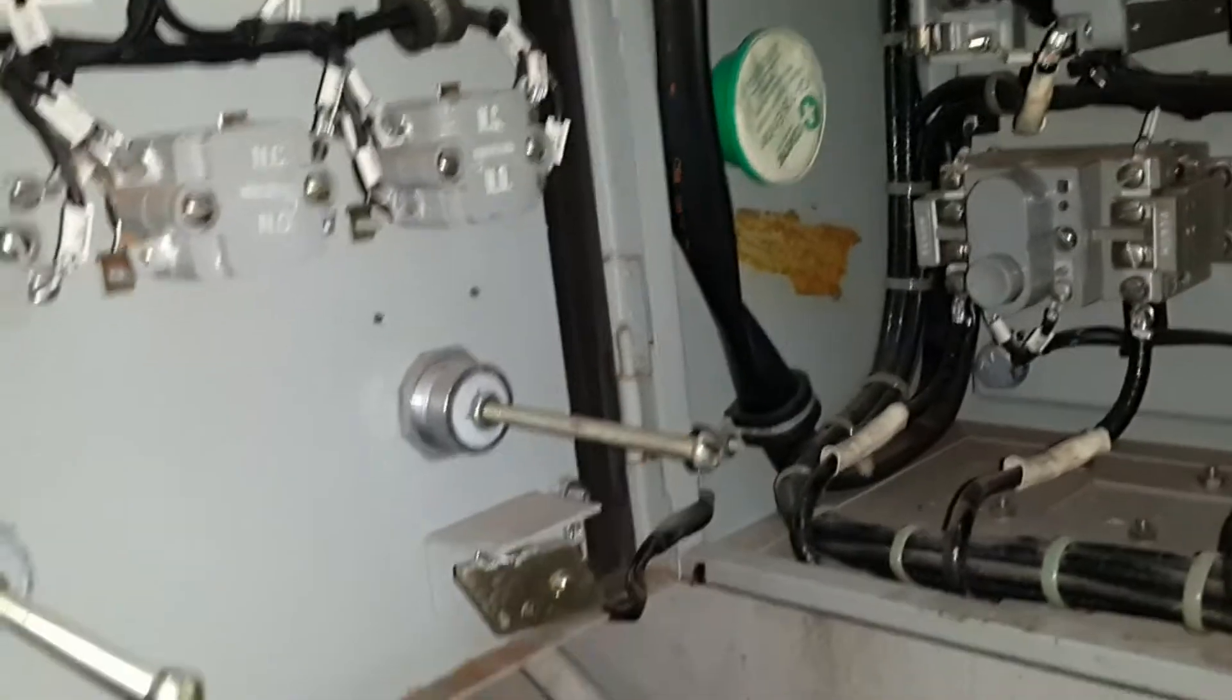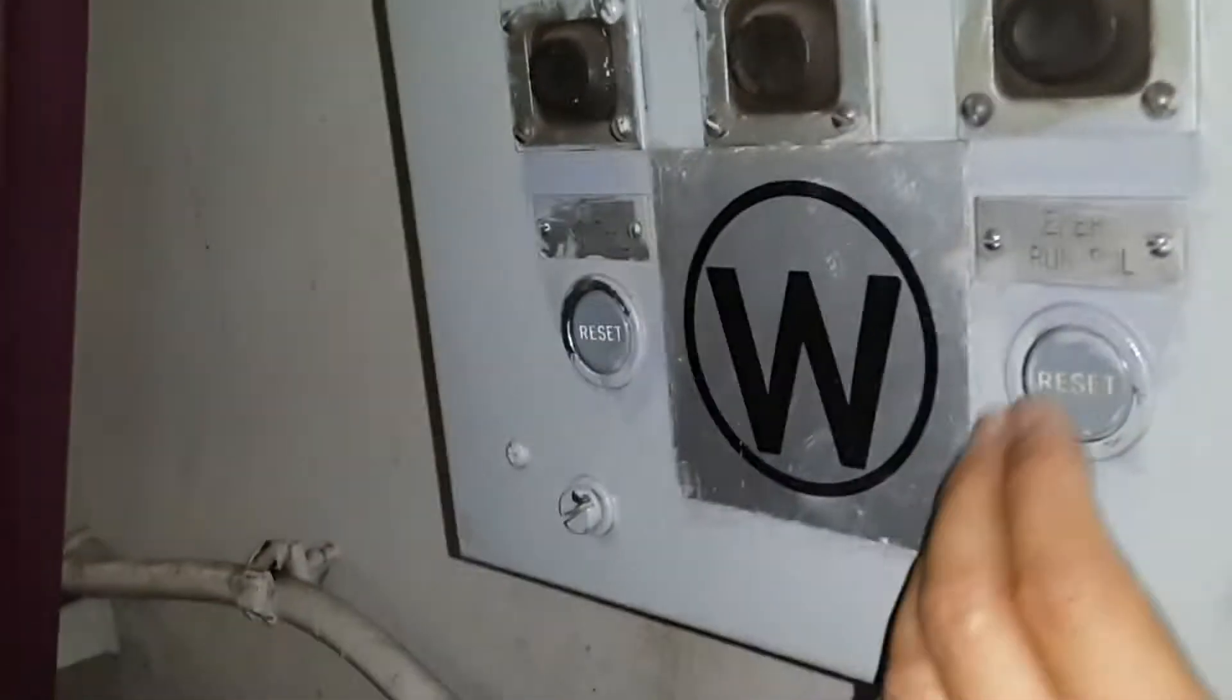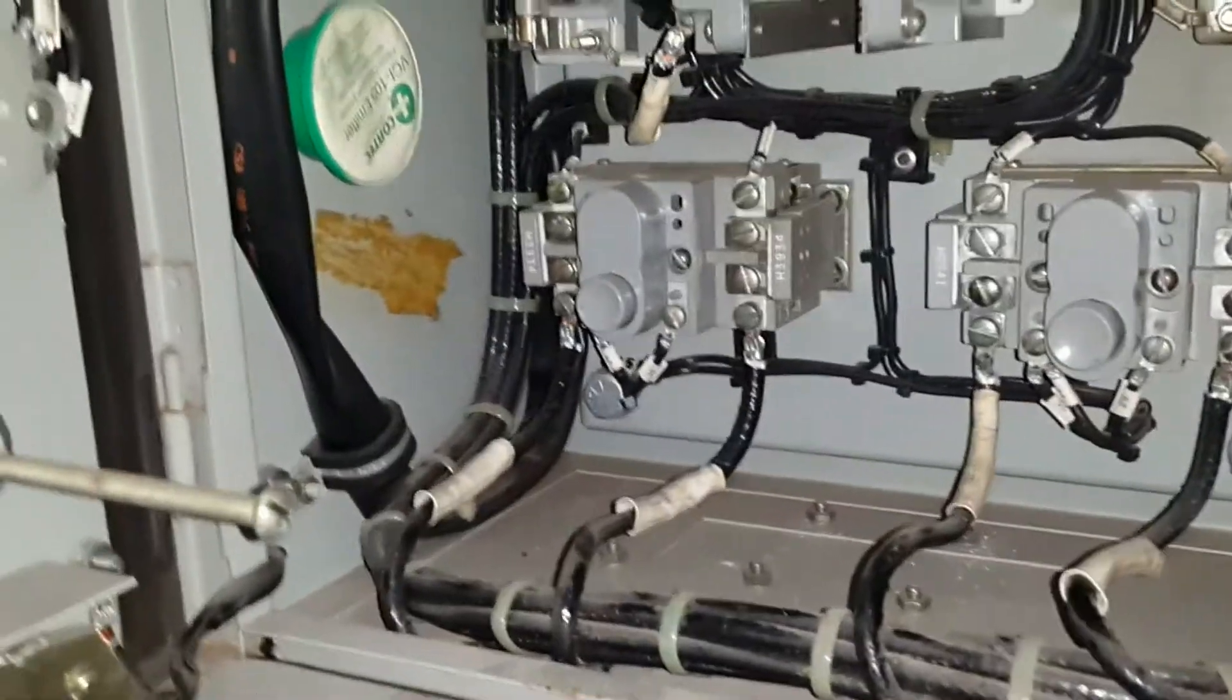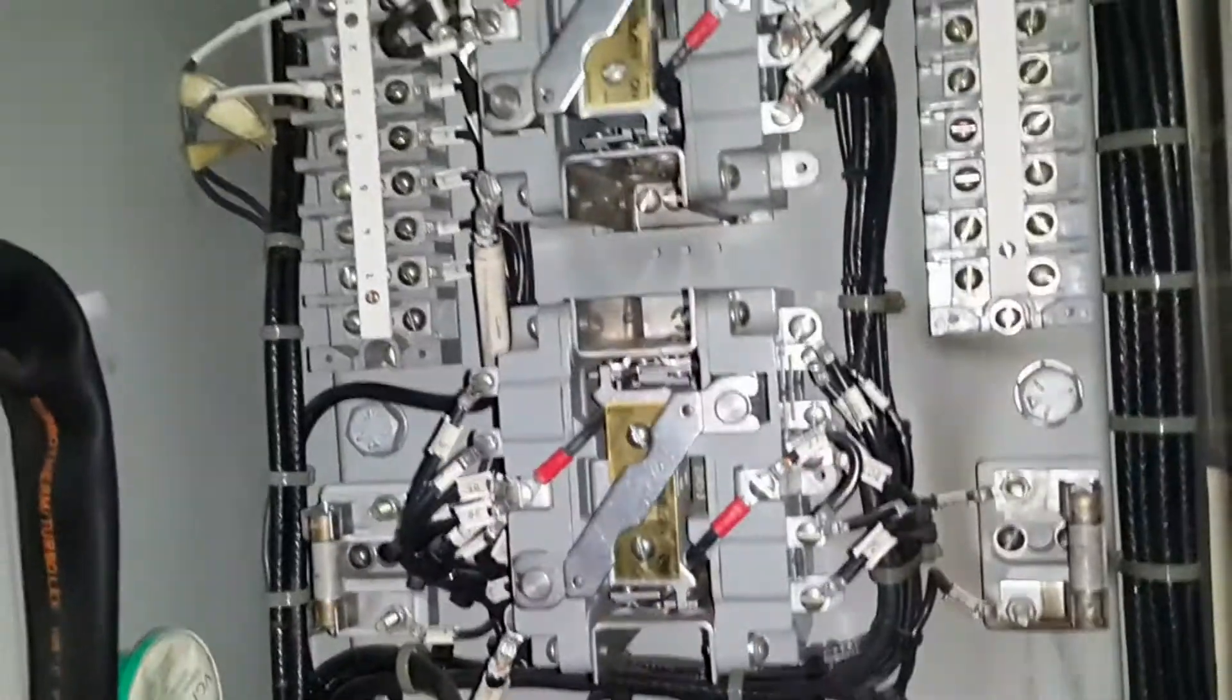First, these things over here are meant so that when you close it and when you press this, you're able to press the resets in case there is an overload that trips. We got two contactors because we got two different speeds: slow speed and fast speed.